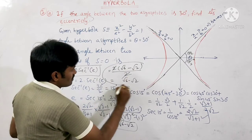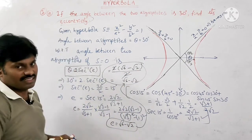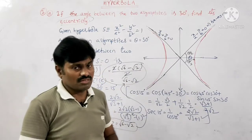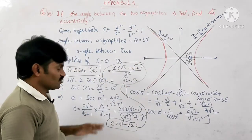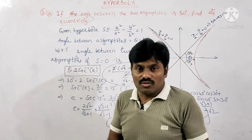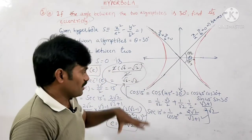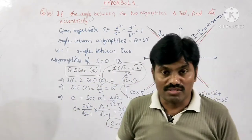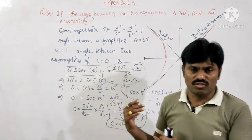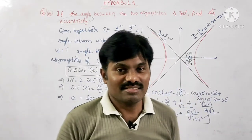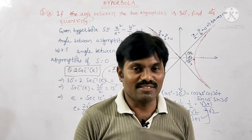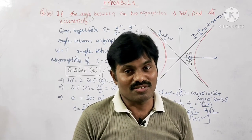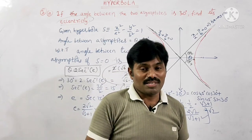So the final answer is e = √6 − √2. In this way we find the angle between two asymptotes, and if the angle is given, we can find eccentricity using θ = 2·sec⁻¹(e). This is a very important question — practice it well. Please share these videos with your friends, subscribe to the channel, click the bell icon, and comment in the comments box. Thank you.